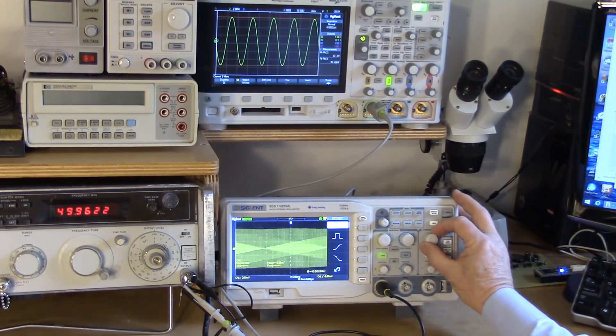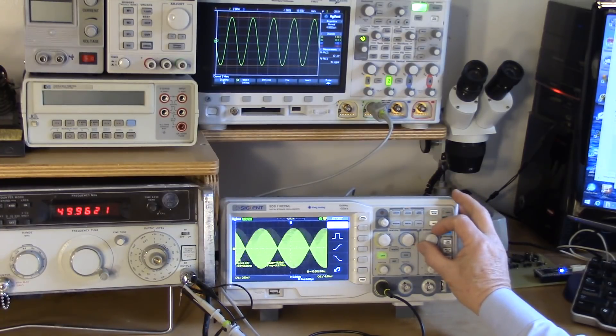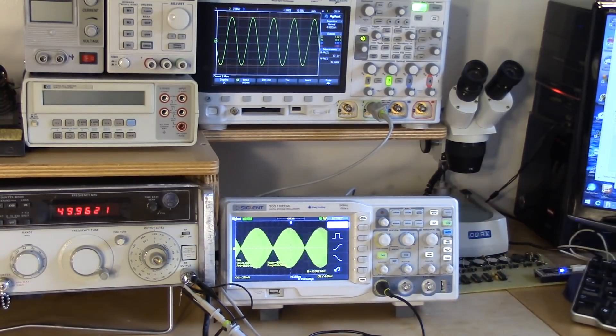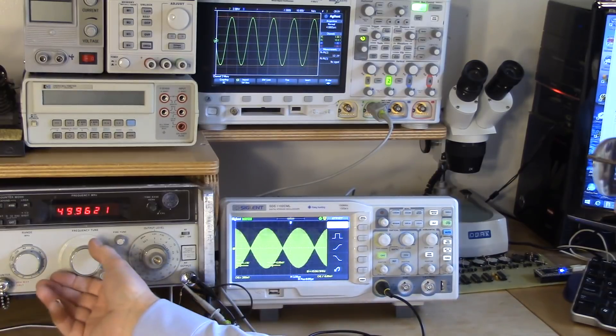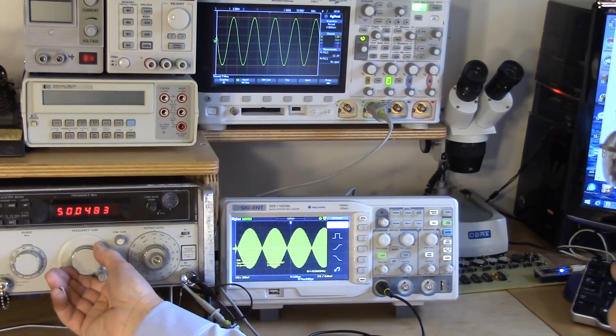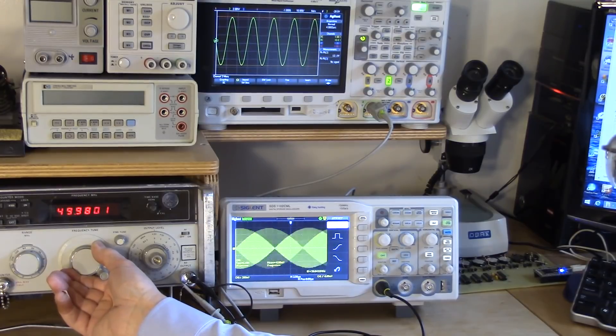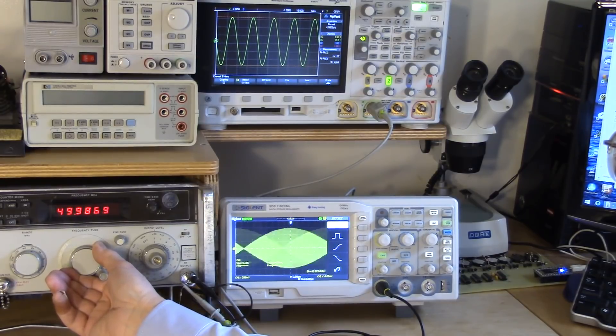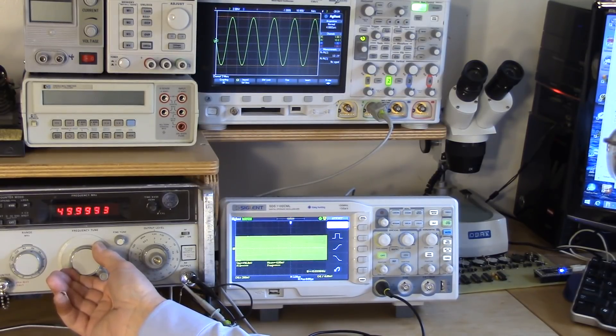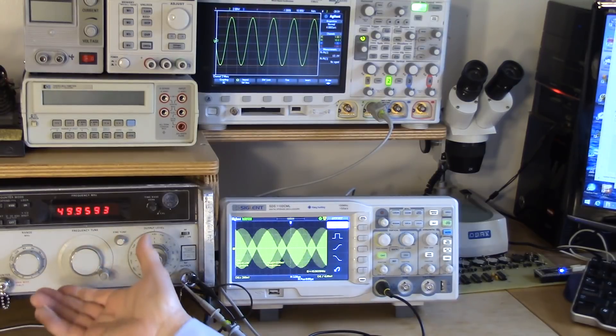we see these artifacts beginning to be displayed on the screen. Until we get to these lower sweep rates where we get what almost looks like a beat frequency being displayed. As I tune the signal generator, just a handful of kilohertz off the 50 megahertz center, we see that the artifacts change enormously. It's obviously not real.